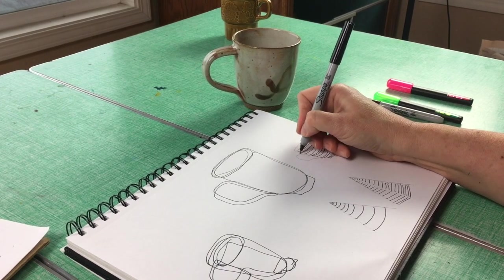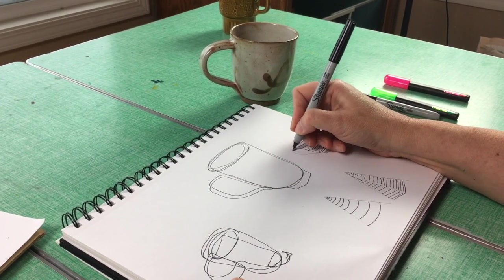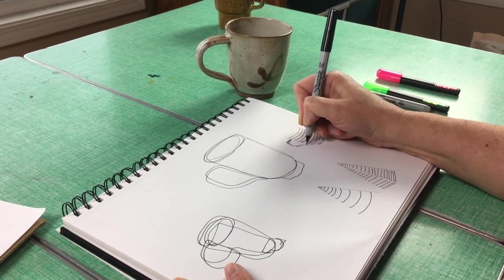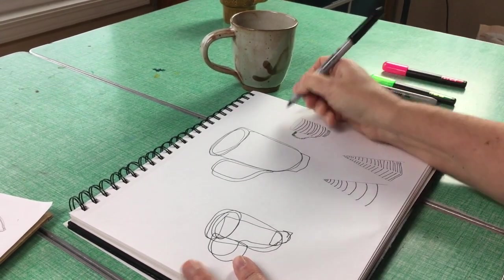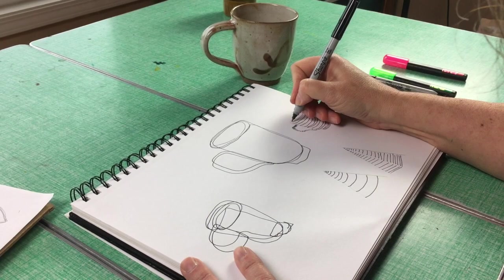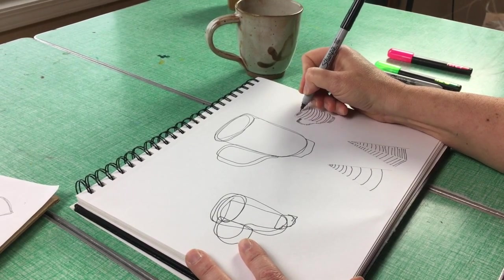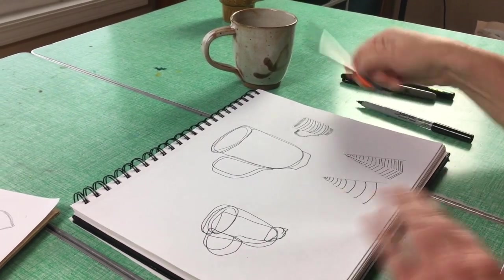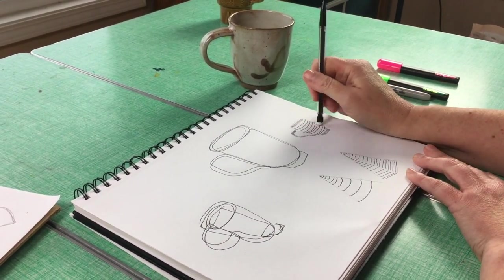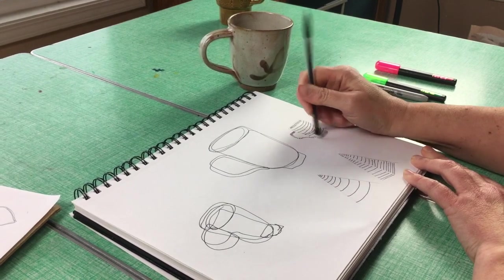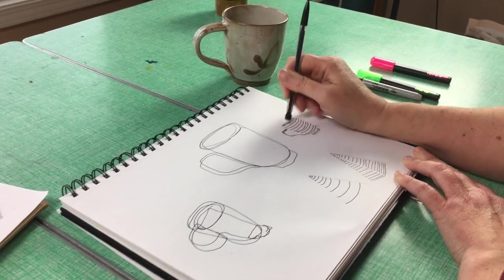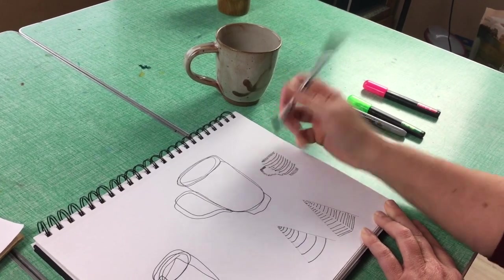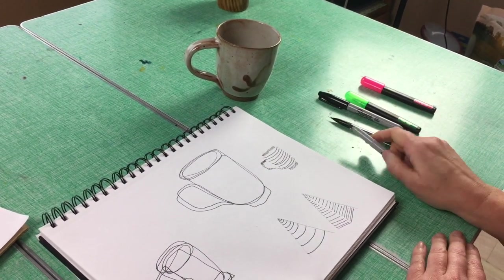And then maybe this. And then on the inside, you know, maybe there's these kinds of lines. Now once that ink has dried, we can erase the edge line and see if it still looks like a mug without the regular contour. Kind of.